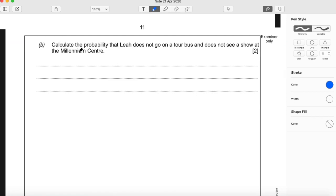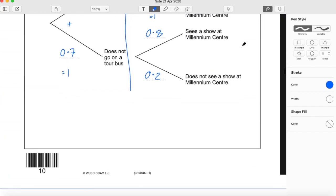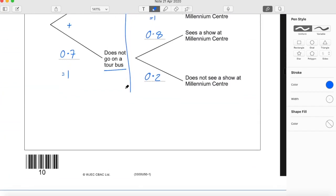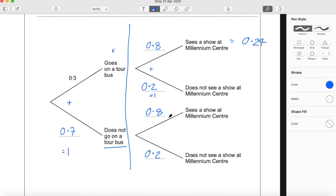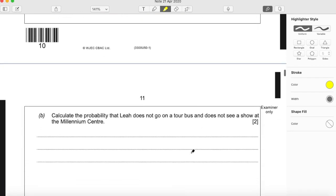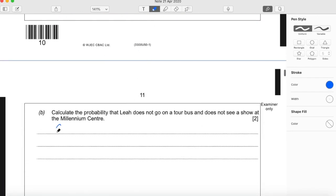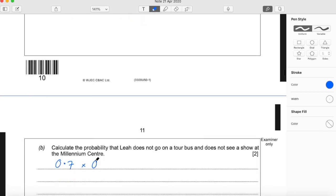Part B, calculate the probability that Leah does not go on a bus tour and does not see a show at the Millennium Centre. So we're asked not to go on a bus tour and not seeing a show. So this tree and this tree. So we're going through the branches so we know we need to multiply. So 0.7 was the first branch times by 0.2 is the second branch.